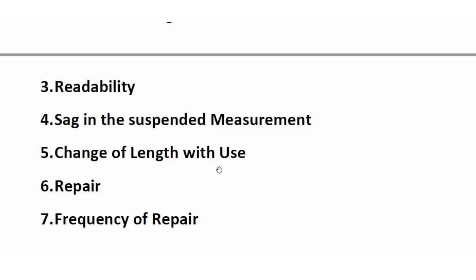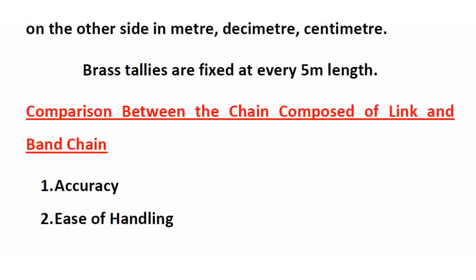In metric chains, the length changes as links drag and bend over use, causing errors. To repair a metric chain, you can use a mallet with a barrel-shaped head. For repairing a band chain or steel band, you use a saw ring and rivet. Band chain repairs are very rare compared to metric chains.